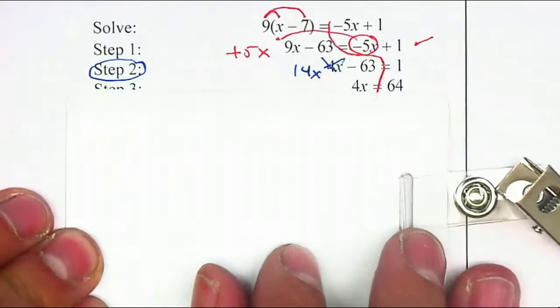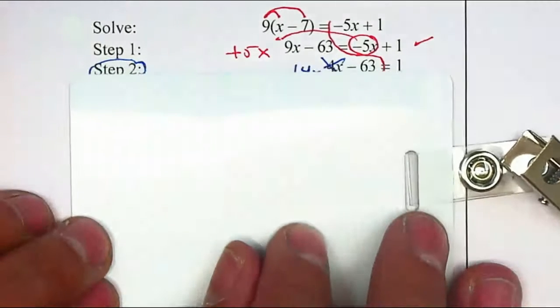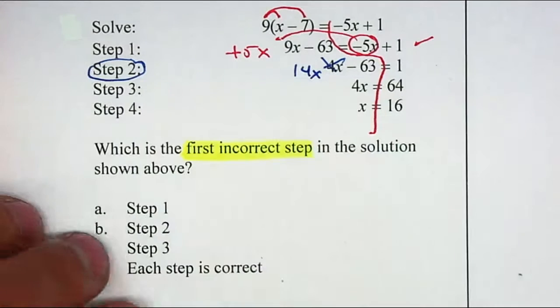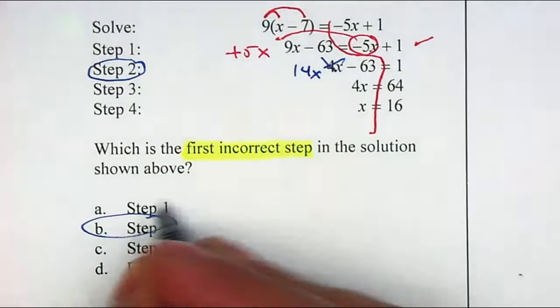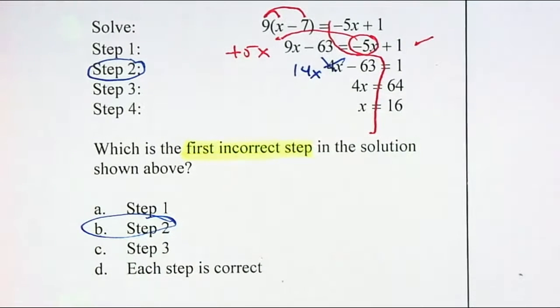Sometimes you have a difficult time telling whether it's step 1 or step 2. If you go through this process, that will make it easier. So step 2 is the first incorrect step.